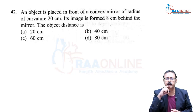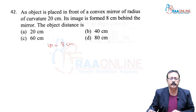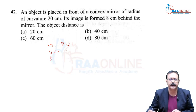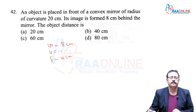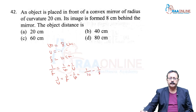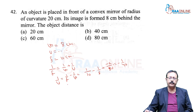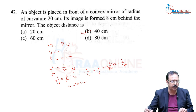Problem 42. An object is placed in front of a convex mirror. The image is formed 8 cm behind the mirror (V = +8 cm). Radius of curvature is 20 cm so focal length F = +10 cm. Using mirror formula: 1/U = 1/F - 1/V = 1/10 - 1/8 = -1/40. The object is at 40 cm in front of the mirror. Option B, 42B.